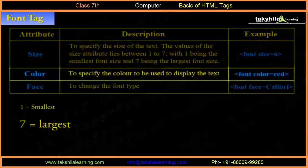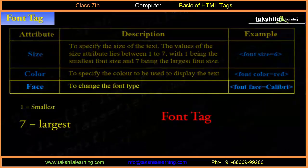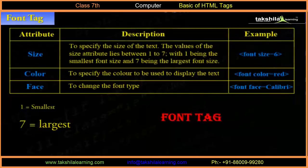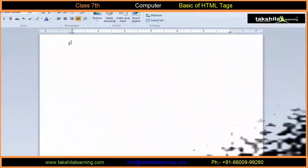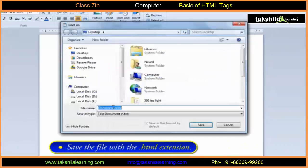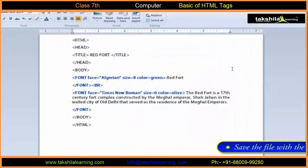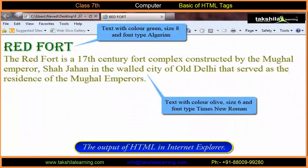The Color attribute specifies the color to be used to display the text — for example, font tag color is equal to red. The Face attribute is used to change the font type — for example, font tag face is equal to calibrate. For example, type the HTML code in the WordPad window and save the file with the .html extension. The output of the HTML program is shown here in the browser.